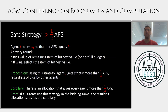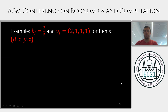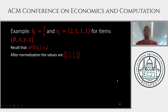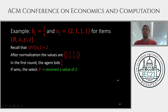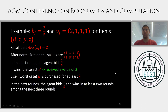As an example of this strategy: recall the earlier example where the agent has entitlement 2/5 and there are four items with values 2, 1, 1, 1. The any-price share is 2, so after scaling, the values become 2/5, 1/5, 1/5, 1/5. In the first round, the agent bids 2/5. If she wins, the game ends and she gets value 2. Otherwise, she bids 1/5 for the next three rounds as long as her budget allows. Since other agents have a remaining budget of 1/5, she will win at least two rounds, gaining a total value of 2.